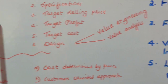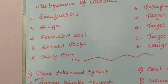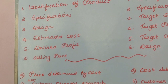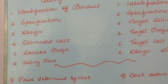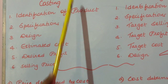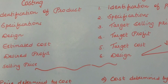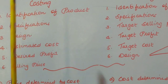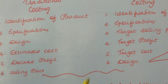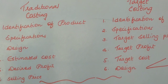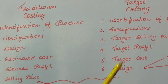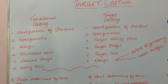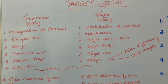Apart from the process difference, there are other differences between traditional costing and target costing. The second difference is: in traditional costing, the price is determined by cost, whereas in target costing, cost is determined by price — that is, on the basis of cost, price is determined.